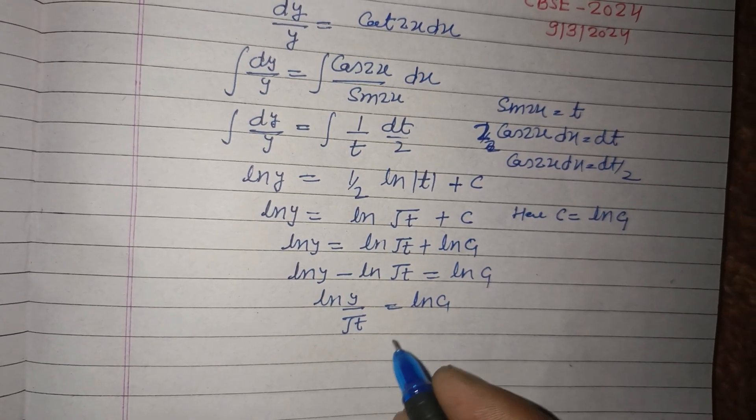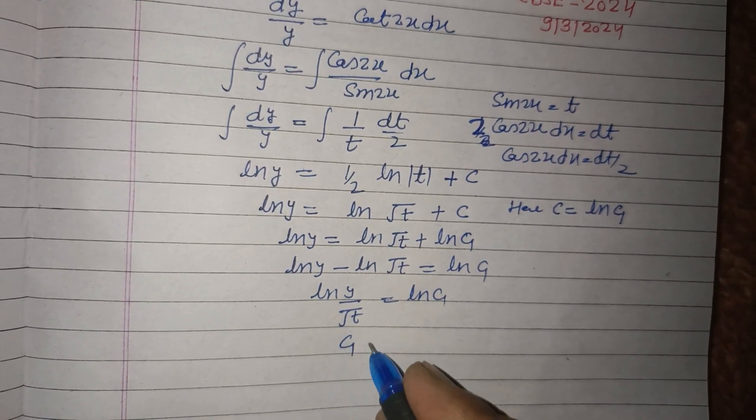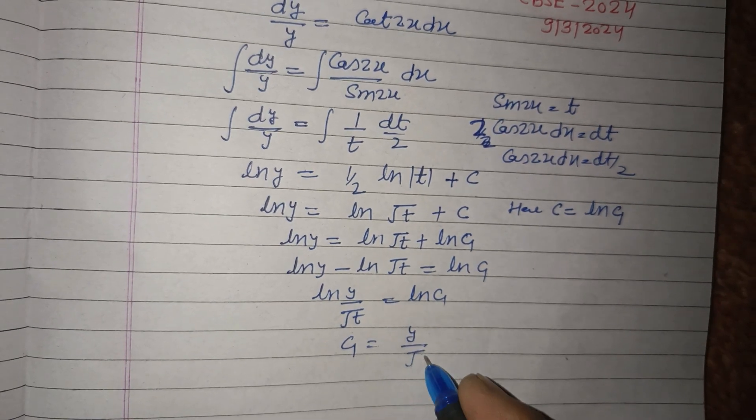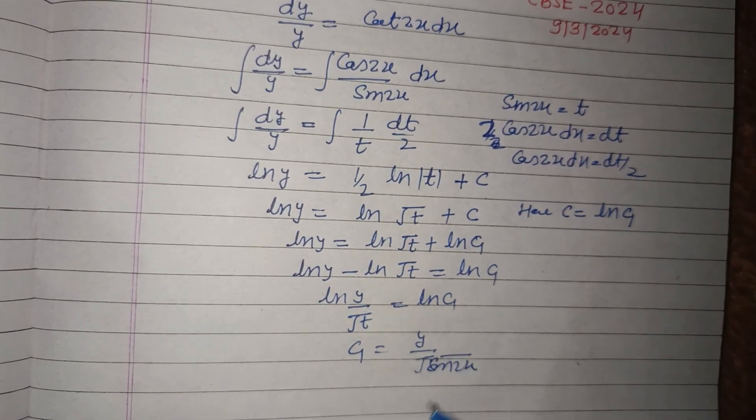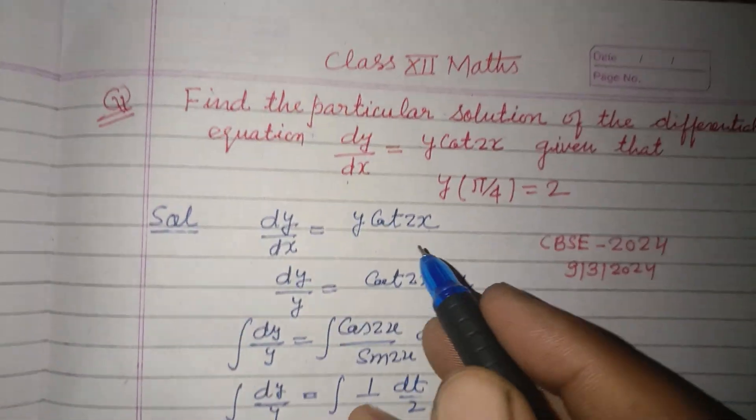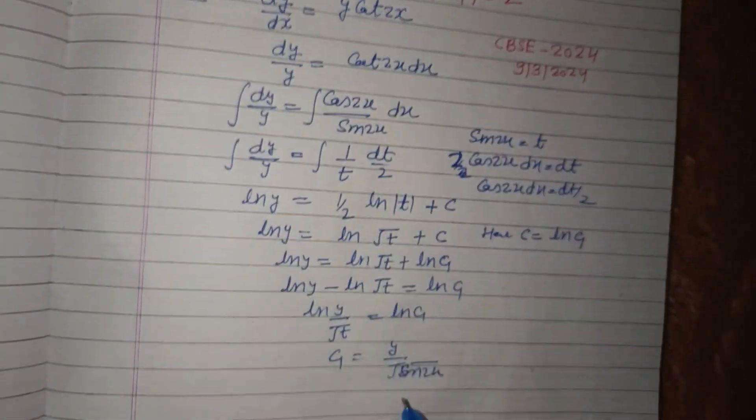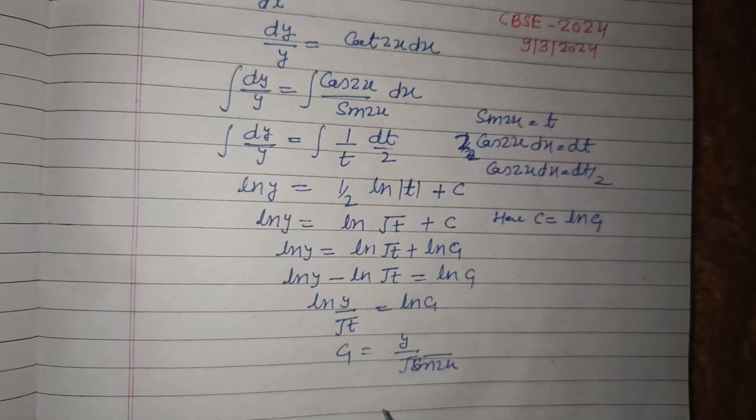Therefore c1 equal to y upon root t, where t is sin 2x. Now here it is given that y(π/4) = 2. So put x equal to π/4.